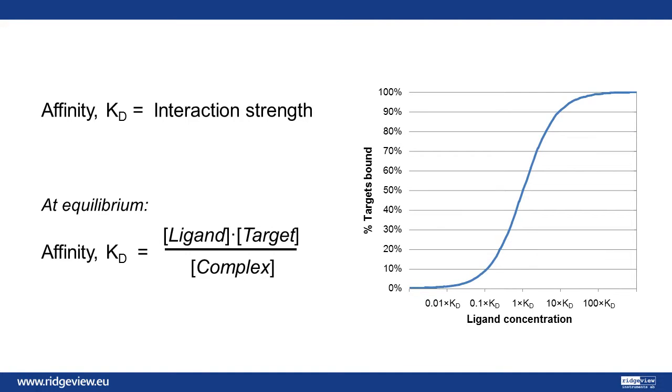This can be represented by a sigmoidal shaped curve, illustrating the amount of bound targets at different ligand concentrations. At a ligand concentration equal to the affinity, half of the targets will have a ligand bound at equilibrium.